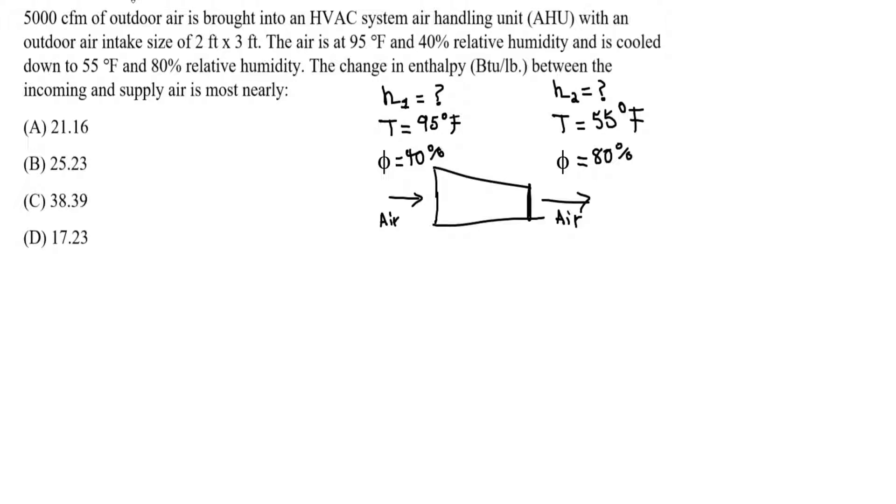Note here that the chart only applies when you have a pressure at pressures of 1 atm. So atmospheric, so we're usually dealing with air, dry air. In this case, it has to be at a pressure of 1 atm. We can use this chart, which is typical for the HVAC systems. So we can use that chart and it's found in our FE handbook.